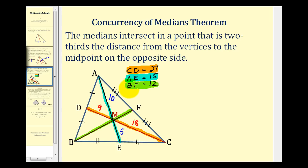And if we know the median BF is twelve units, here in green, well two-thirds of twelve would be eight. So this would be eight units, two-thirds of twelve. And this would be one-third of twelve, which would give us four.